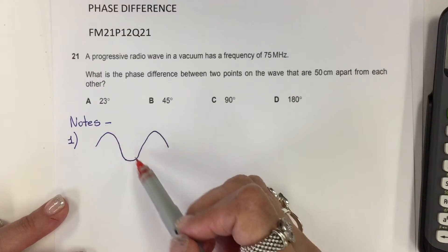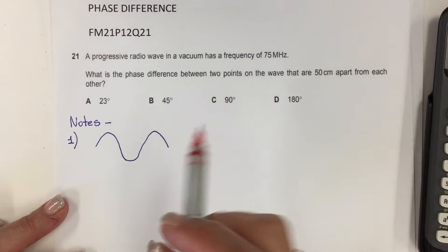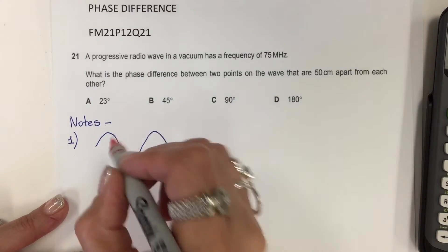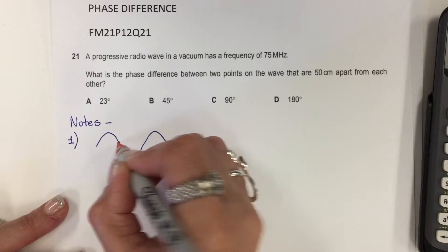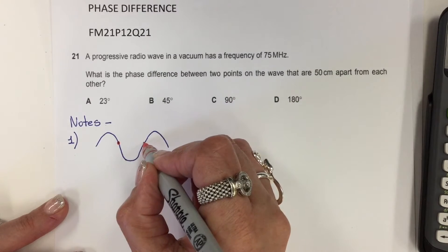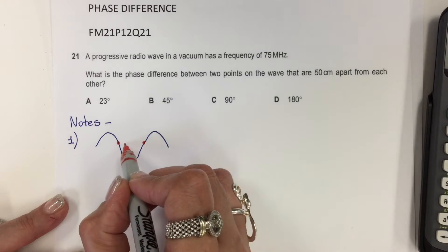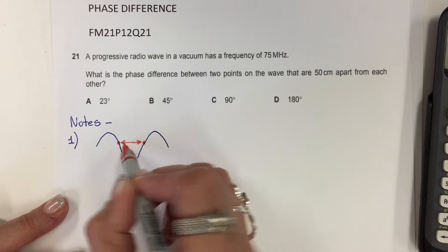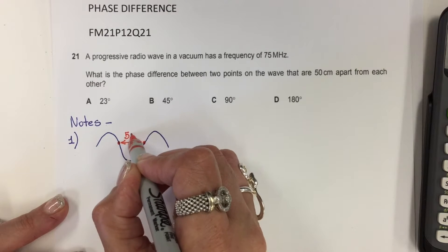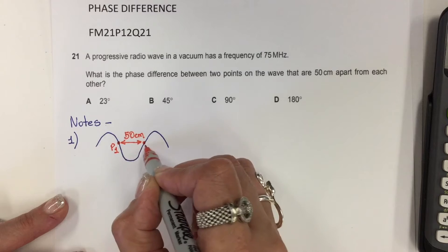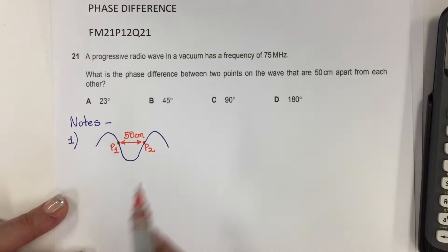This wave represents a section of the radio wave, and I will have one point here and the other point right here. The distance between both points is 50 centimeters. This is P1 and this is P2. That's the difference between both points.